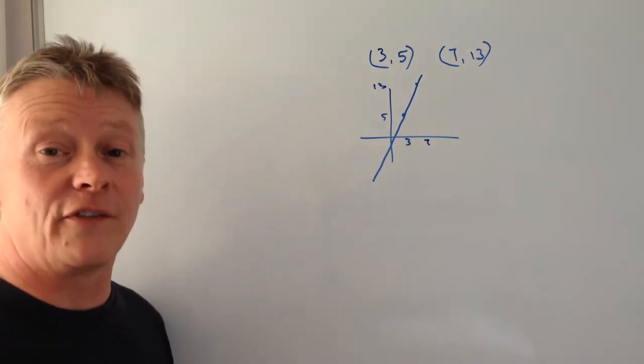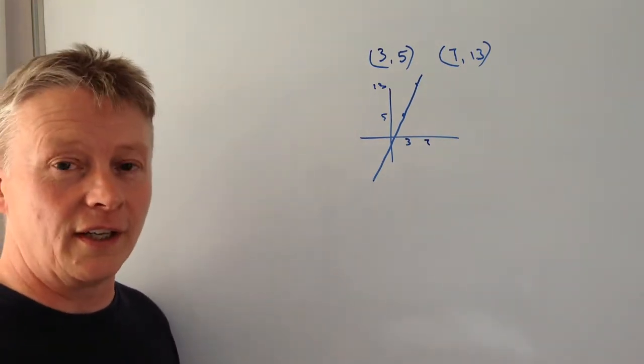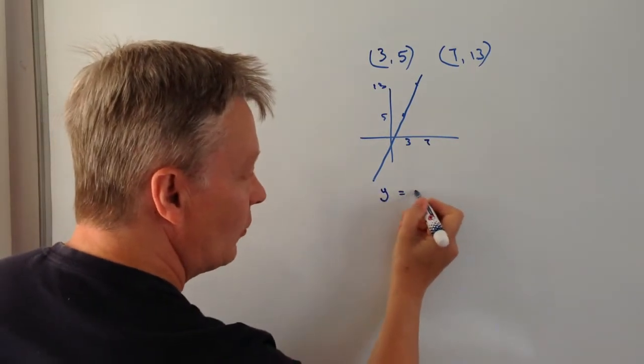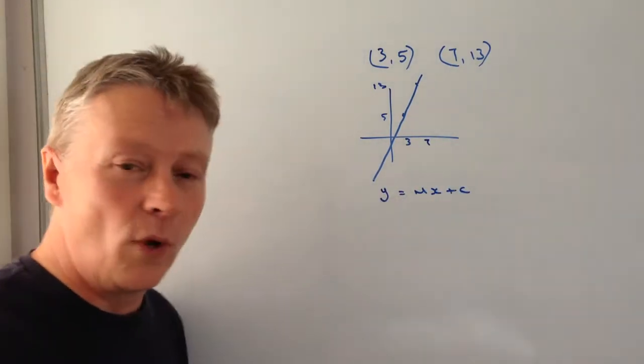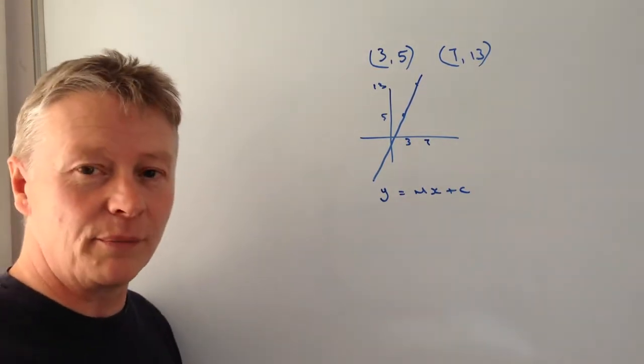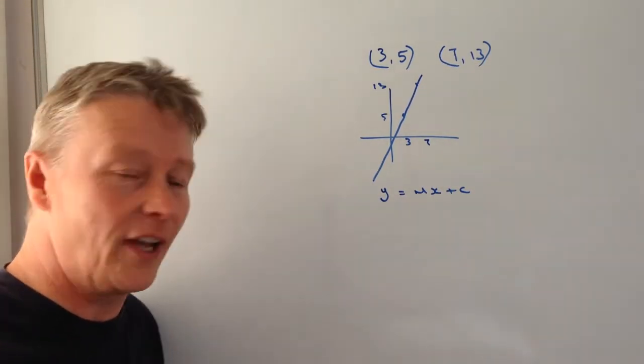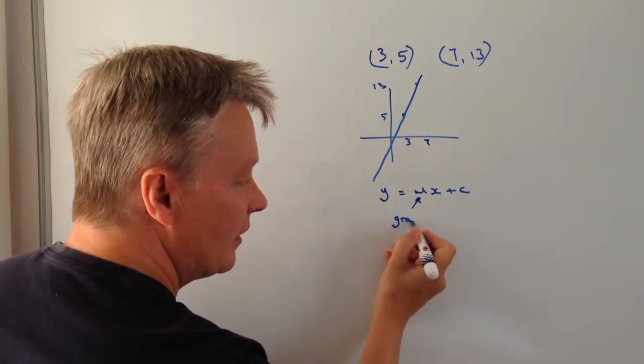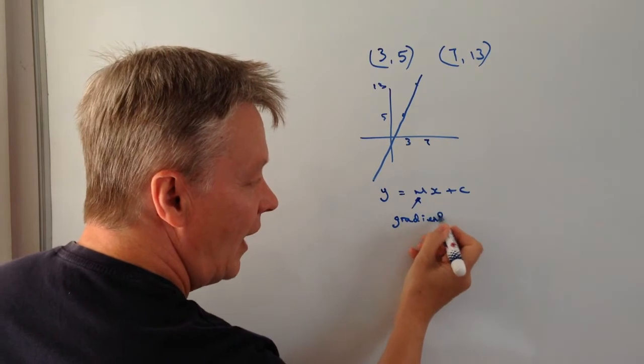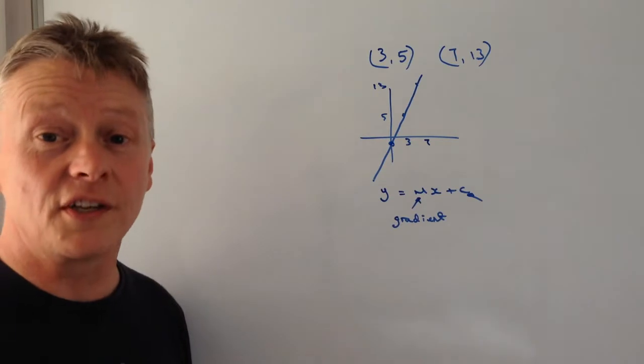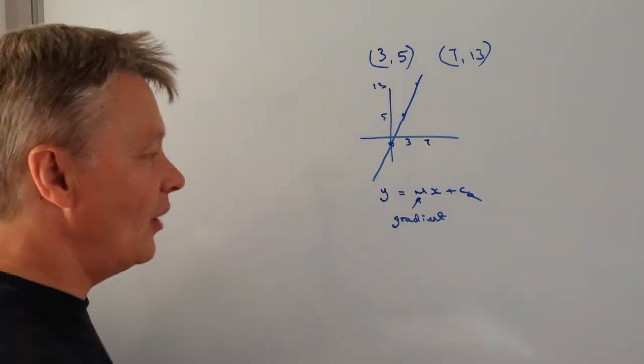And what we're asked to do is to find the equation of that straight line. Well the general form of the equation is going to be what they call y equals mx plus c. Now I'm very aware that with some textbooks they'll say that slightly differently, but it basically amounts the same thing. What we're saying really is this value of m is the gradient, and this value of c is the y-intercept, it's actually where it crosses the y-axis.